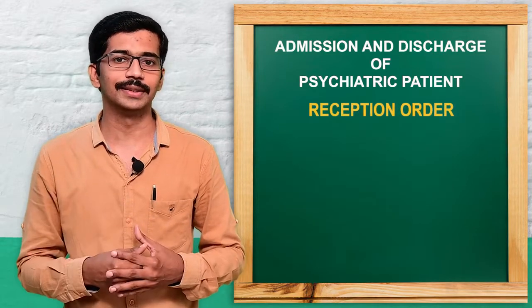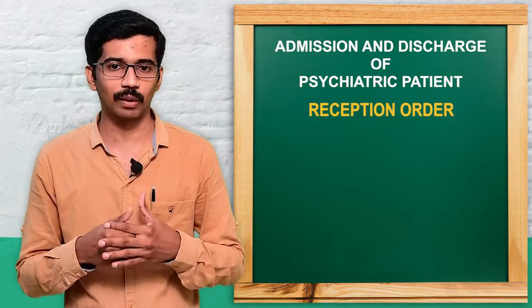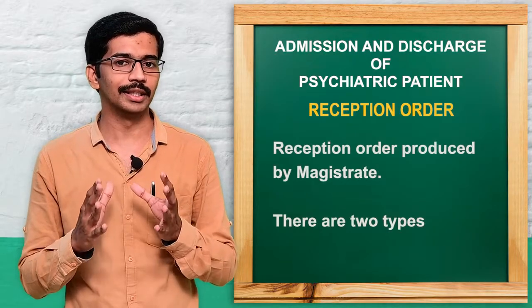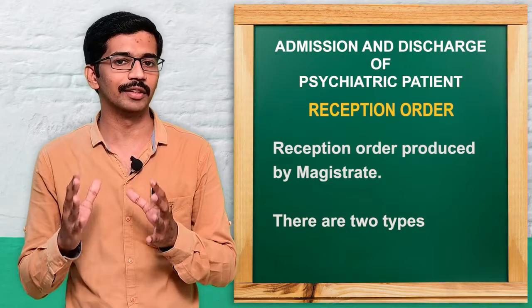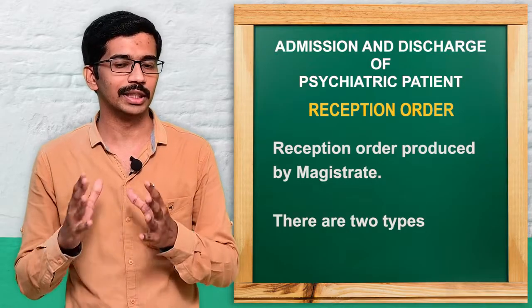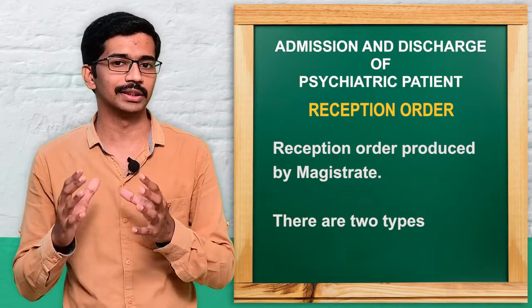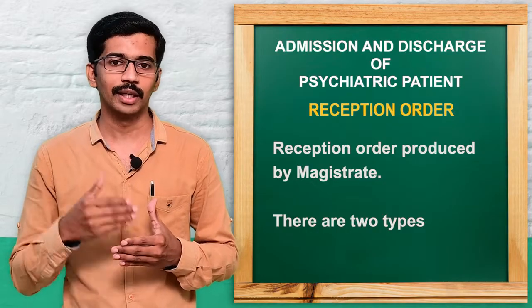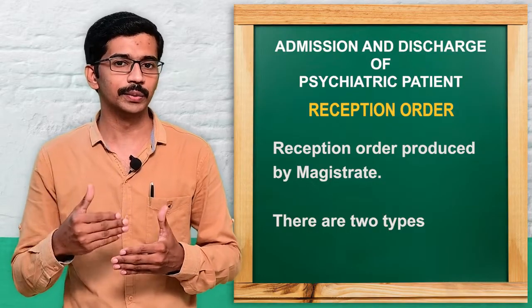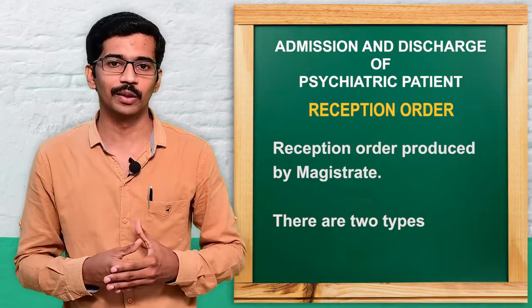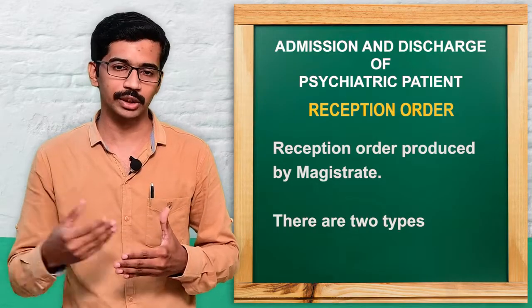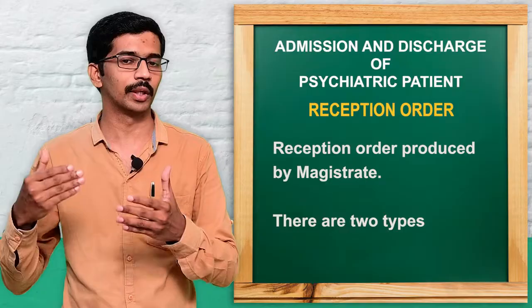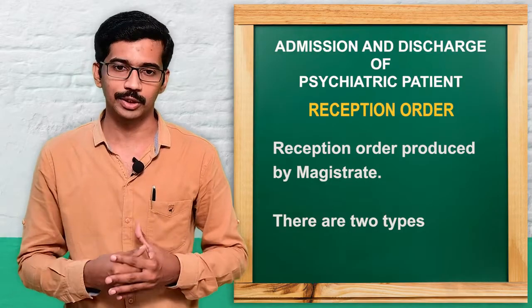The next type is the reception order. The reception order is given by the magistrate — only the magistrate has the power to give a reception order. There are two criteria: reception order on petition, and reception order on producing before the magistrate.